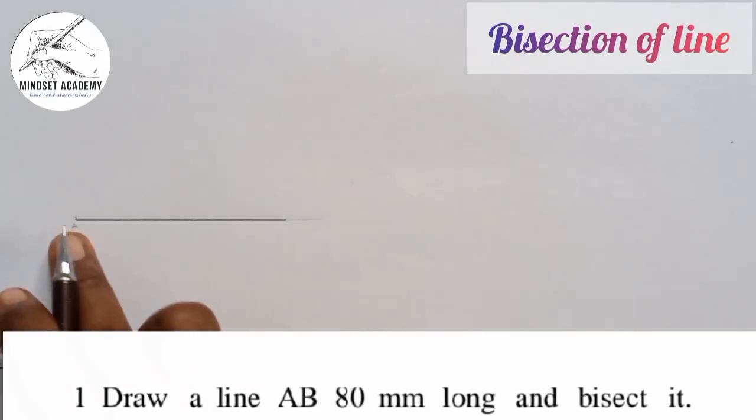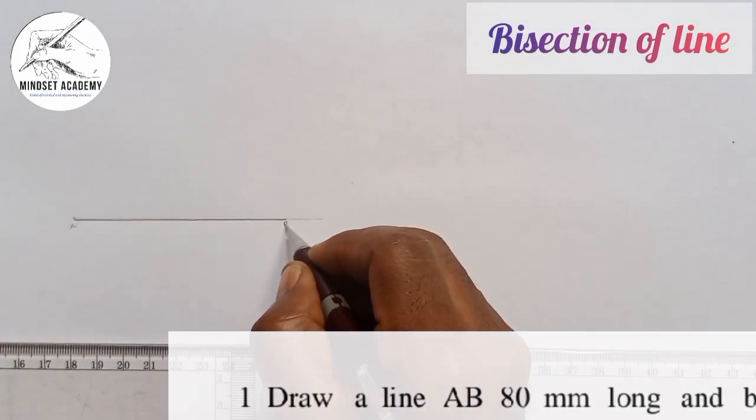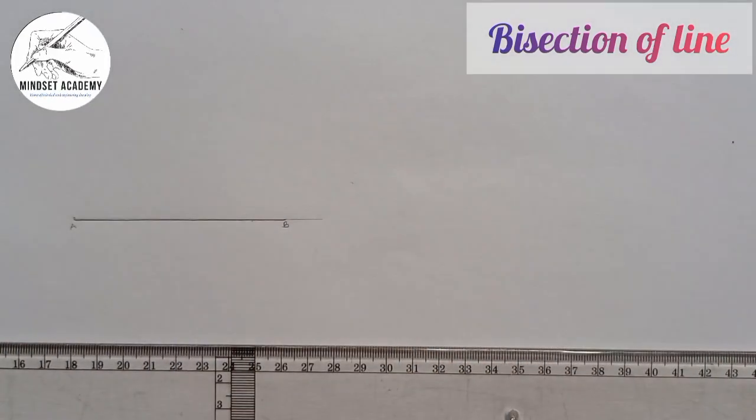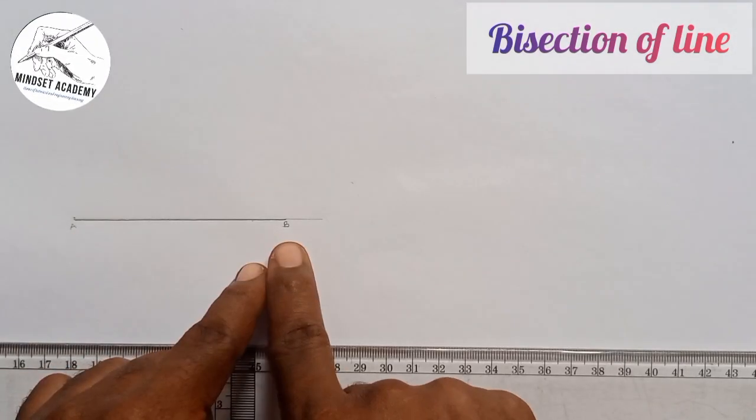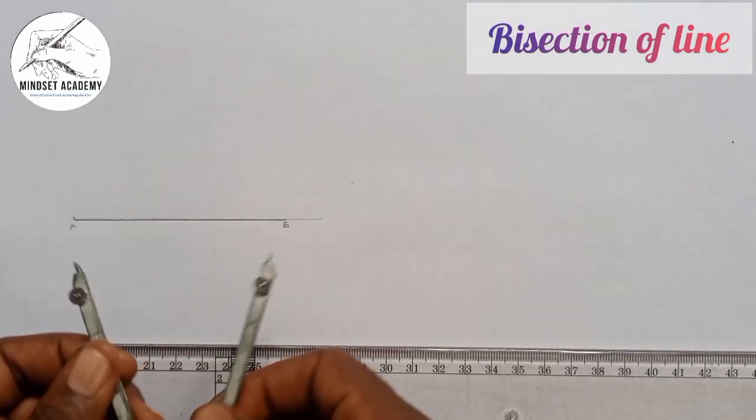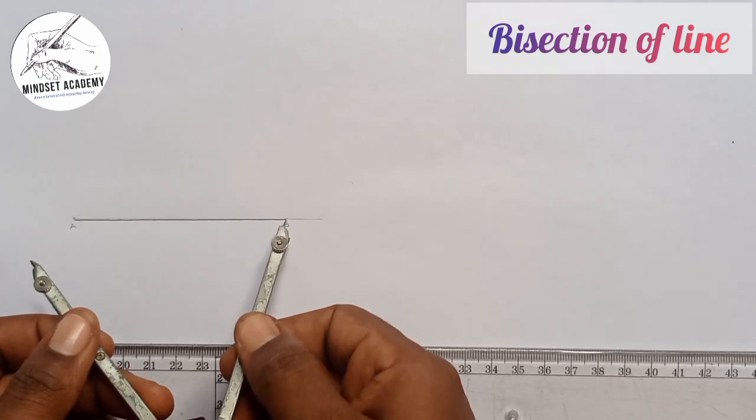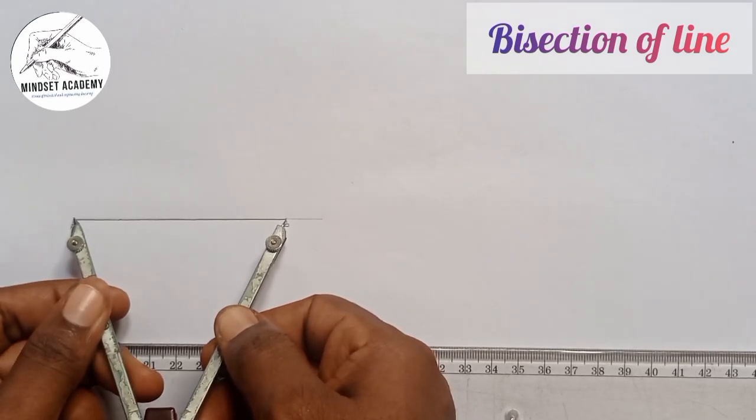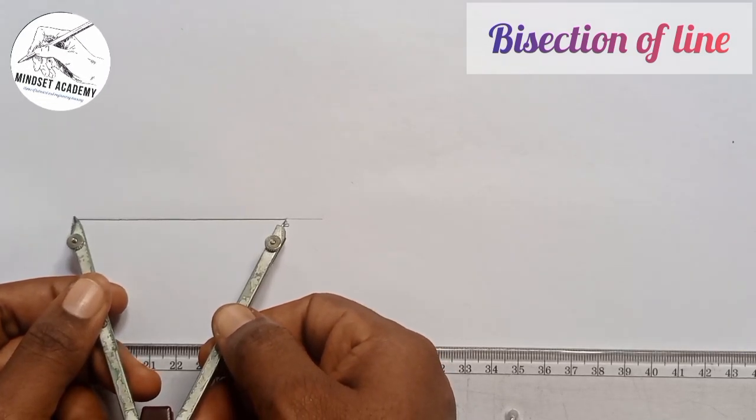This is my A and this point here is my point B. Now I will take my compass. I'll place it in between A and B as my radius.